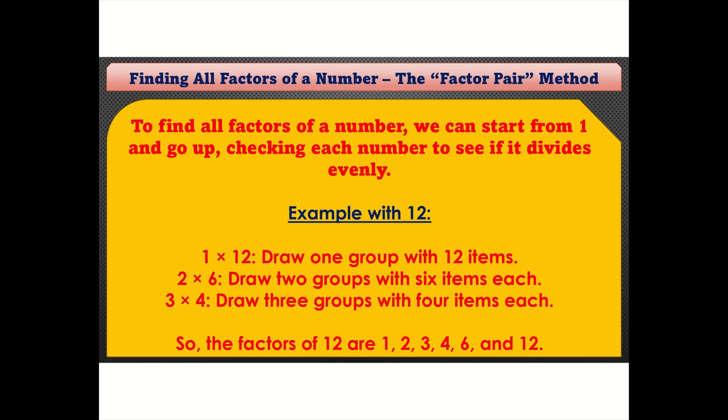Finding all factors of a number - the factor pair method. To find all factors of a number, we can start from 1 and go up, checking each number to see if it divides evenly.